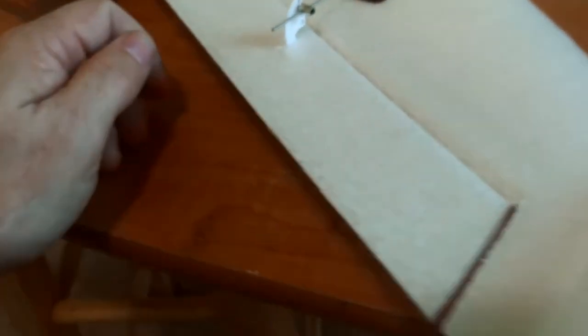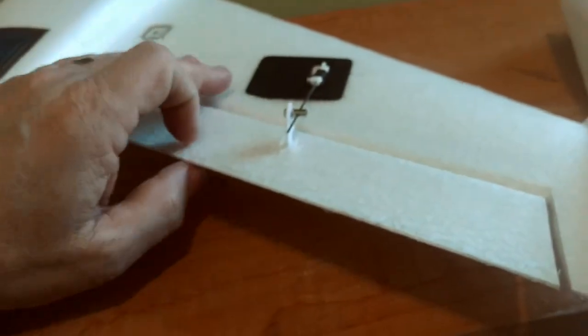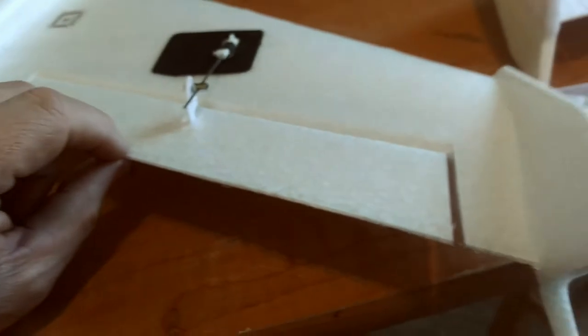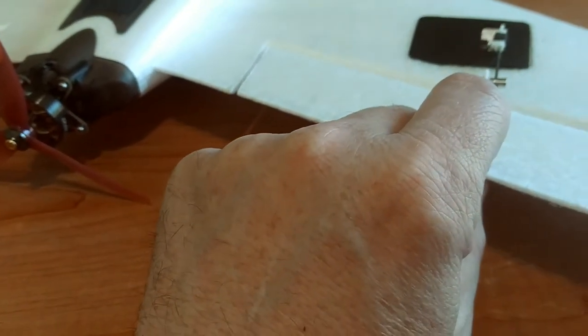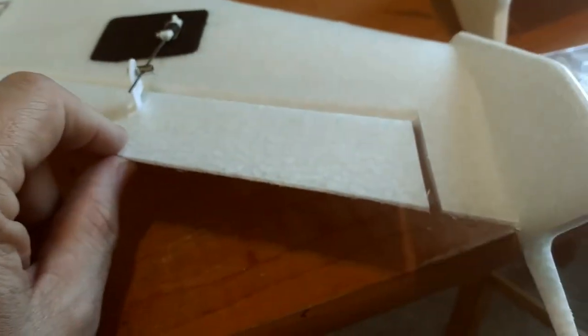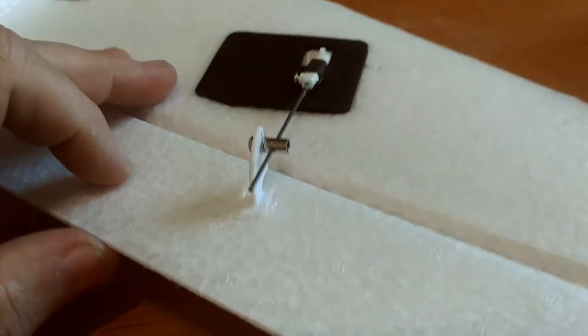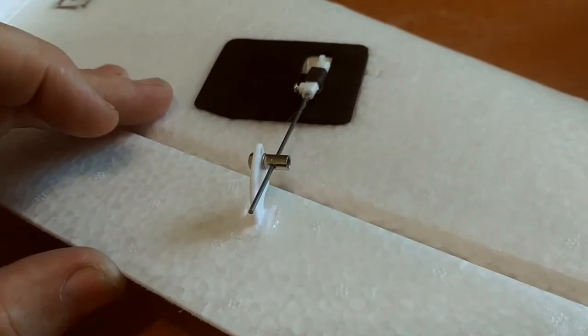As you can see here on my He-Wing, I can pretty much move the whole plane. You can see my control surfaces. Yeah, they're moving because I'm bending the styrofoam. There's no slop at all in this, as you can see.